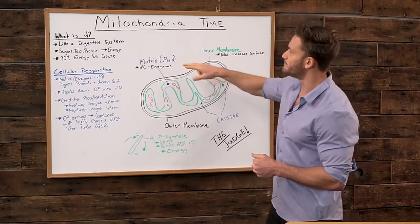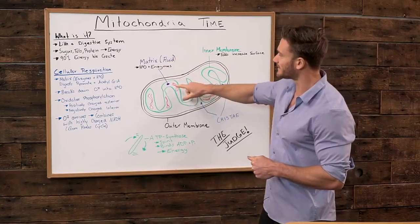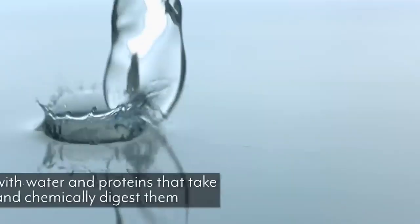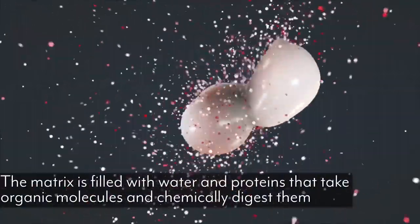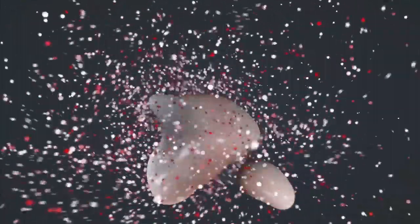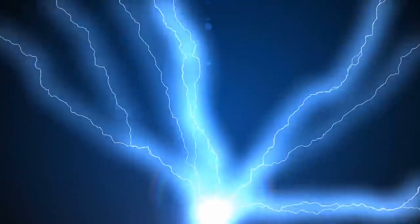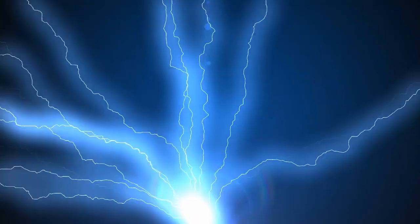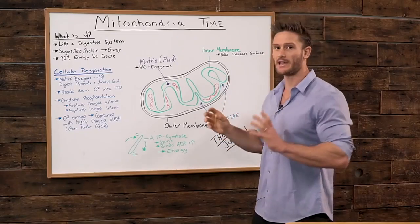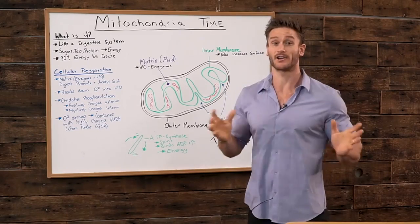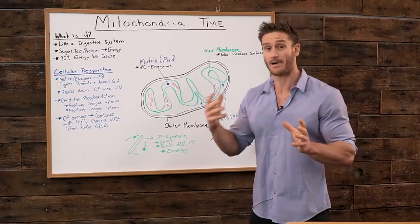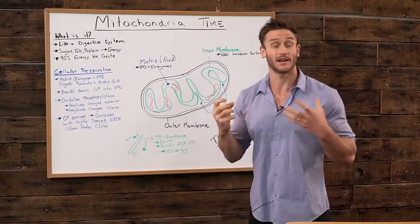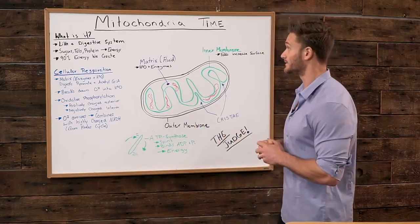Then we have the matrix. The matrix is the fluid inside this inner membrane. Inside this matrix, you have water and different proteins, in this case enzymes, that break down and cause different electric charges to occur. Basically, the mitochondria is all just a balance of the electron transport chain. In short, it's a balance of negative and positively charged things going on that are creating energy and creating heat.